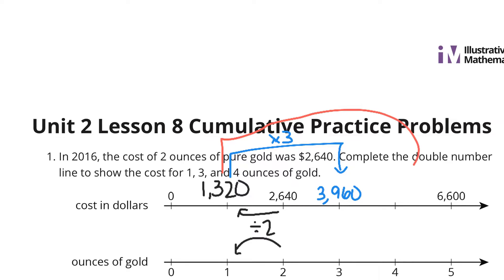I can take 1,320 and multiply it by 3 to get 3,960 for the 3 ounces of gold. And likewise, I can take 1,320 and multiply it by 4 to get 5,280 for 4 ounces of gold.